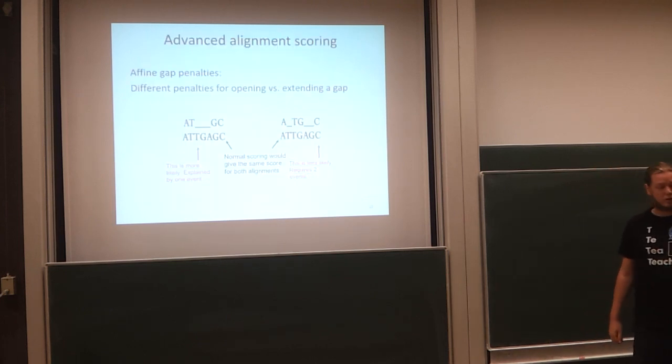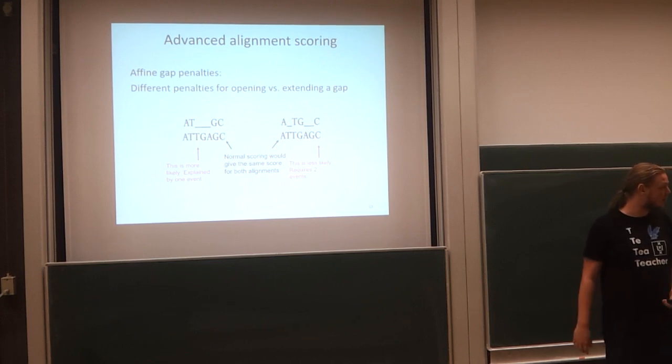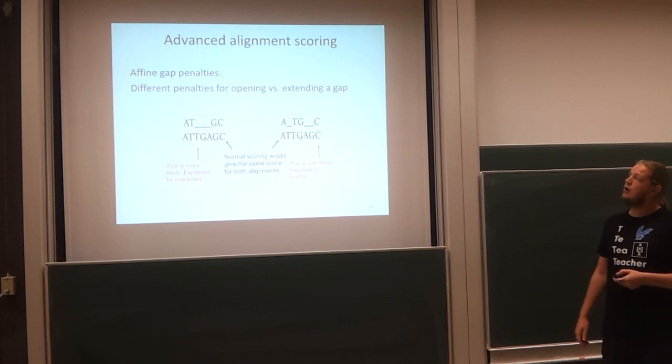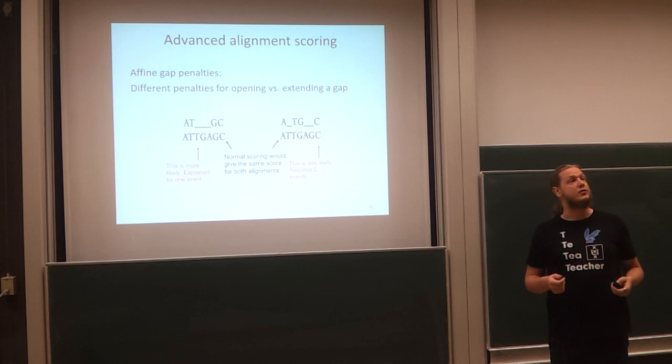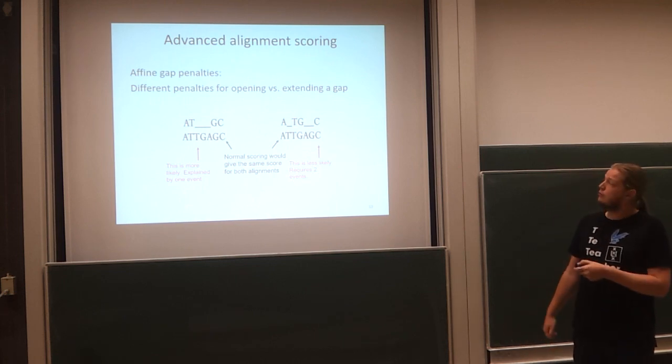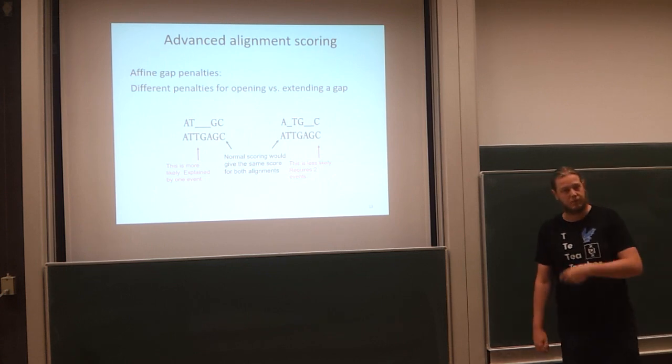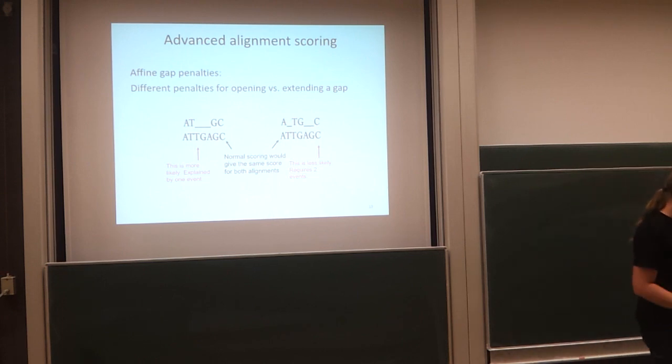As an exercise, we can derive these by looking at manual alignments, but they also make sense from a biological point of view. We can explain why some exchanges are more likely than others. There's also a way to make the gap penalties more complicated. I won't bother you with too much detail, but there is such a thing called affine gap penalties. The idea is that opening a gap should be more expensive than extending, because an insertion of three nucleotides in one go is evolutionarily more likely than an insertion of one nucleotide in one spot and two nucleotides in another. In other words, this situation should be more likely than this situation.